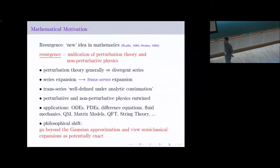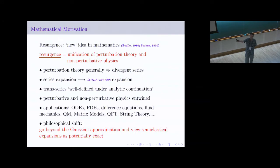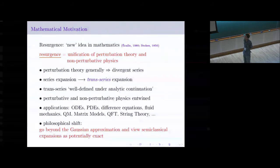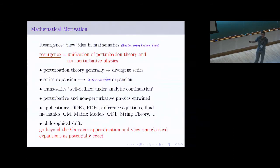Stokes was trying to come to terms with why there was a contribution from one saddle point when x was positive, but from two saddle points when x was negative. He struggled with this question and came up with a brilliant answer. This is now, in the spirit of the name resurgence, being reborn in the formalism developed by Écalle called resurgence. For a physicist, one way to define it: it's a way to unify perturbation theory and non-perturbative physics.